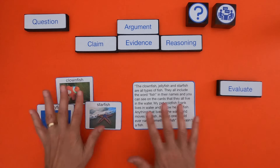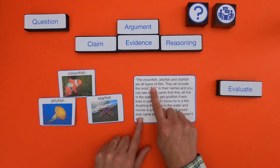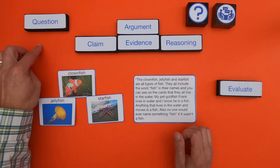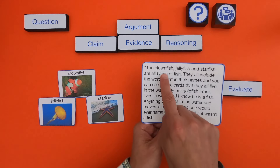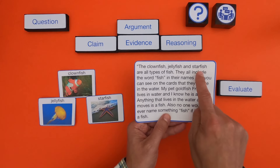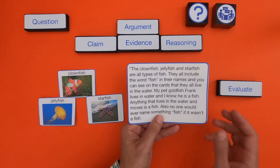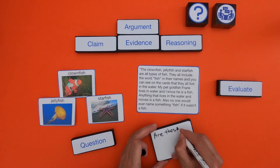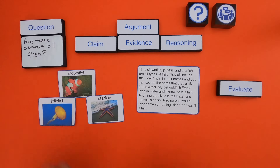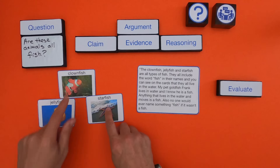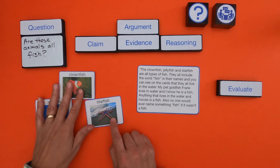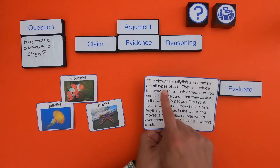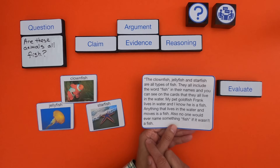Okay, so what we have here is an argument by a student. We'll start reading it and then identify what question they're trying to answer. The first sentence says the clownfish, jellyfish, and starfish are all types of fish. So the question they're trying to answer is: are the clownfish, jellyfish, and starfish all fish? They've answered that question with the claim: the clownfish, jellyfish, and starfish are all types of fish.